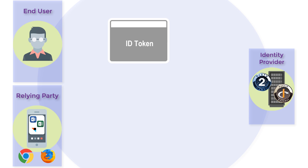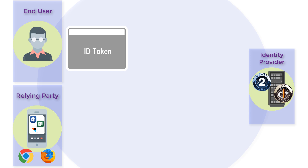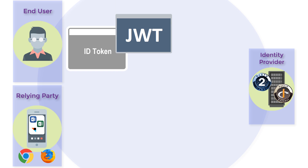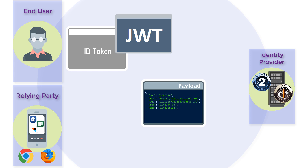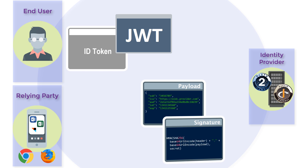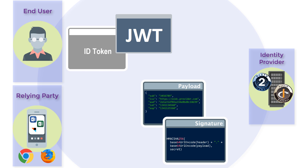As with access tokens, the ID token is encoded as a JSON Web Token or JWT. The claims in the token form part of the payload. Like an access token, the ID token is also digitally signed using JSON Web Signature to achieve integrity and nonrepudiation.